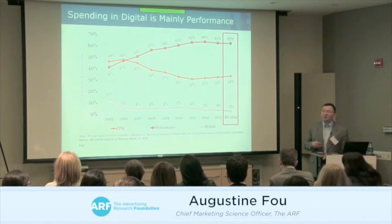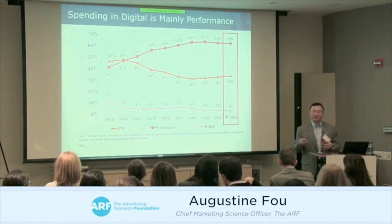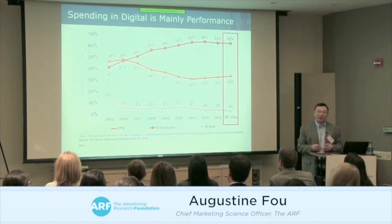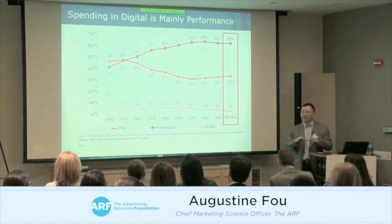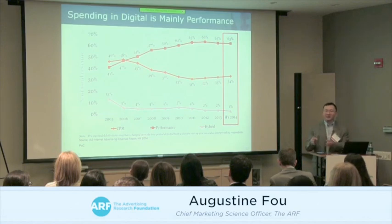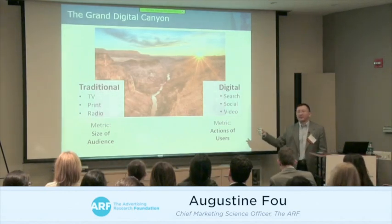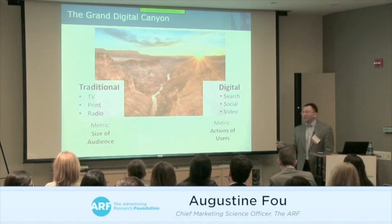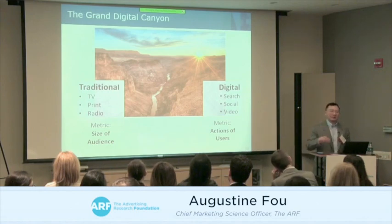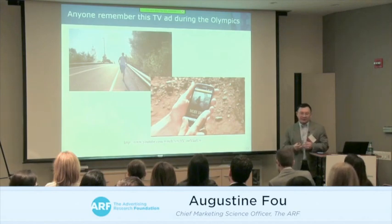IAB data shows that roughly two-thirds of digital spend is on the performance side, and one-third on display and awareness. This makes sense because TV is still great at awareness — digital needs to be used for something else. Reprising the earlier slide, traditional media measures audience size, while digital measures consumer actions. Let me use a classroom example to illustrate this.